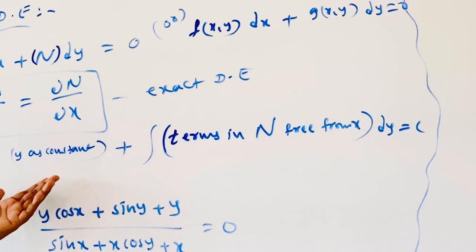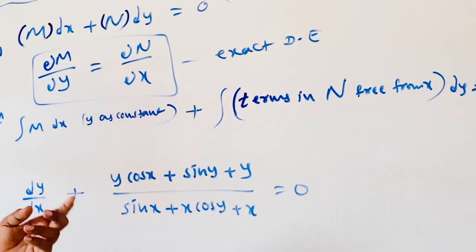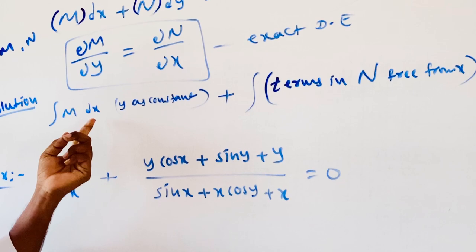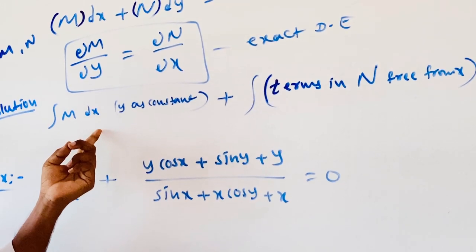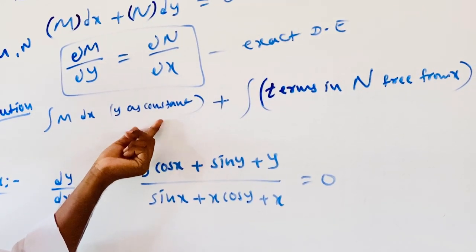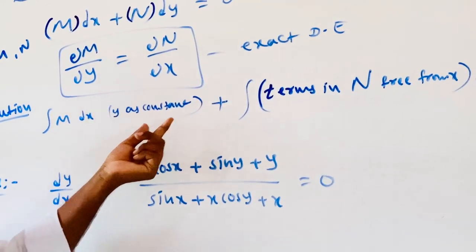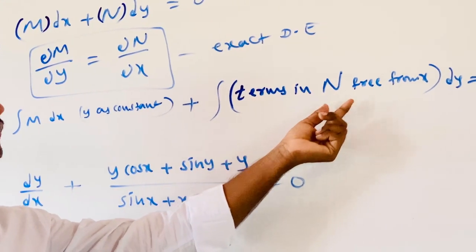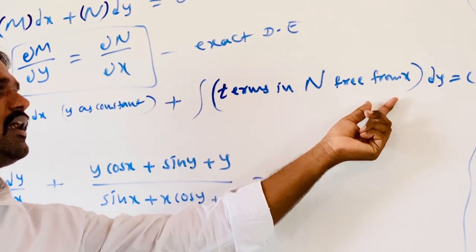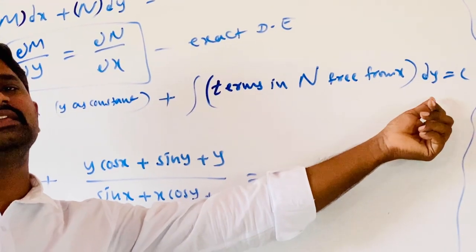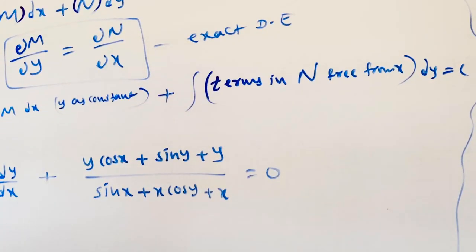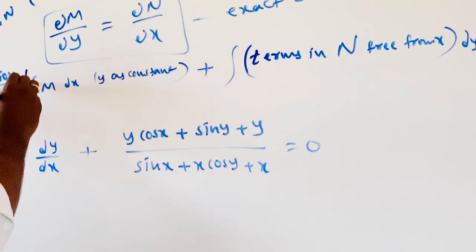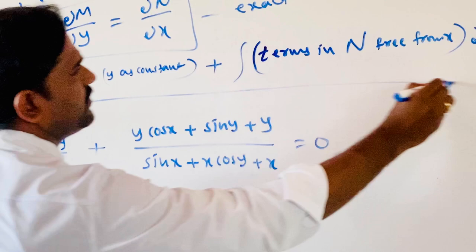Or we can write the general solution another way: integral of N dy (treating x as constant), plus integral of terms in M that are free from y, into dx, equals c. We can choose any one of these methods.